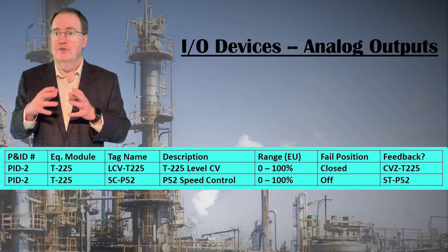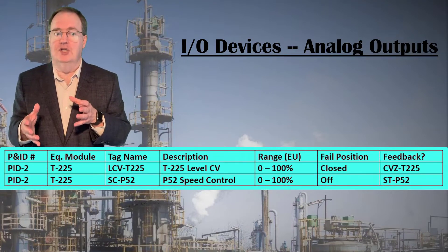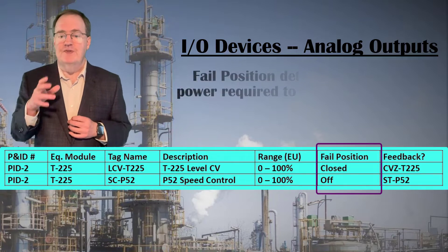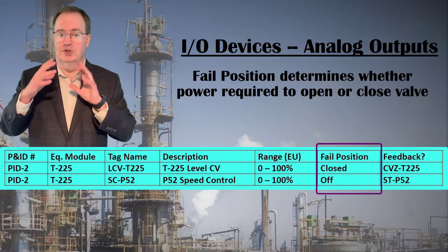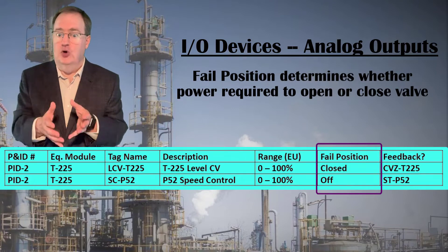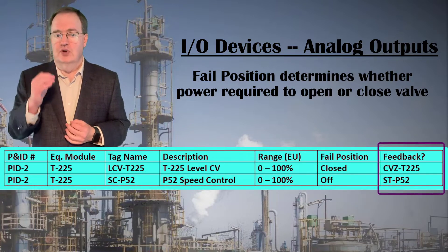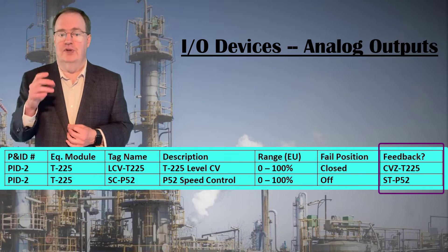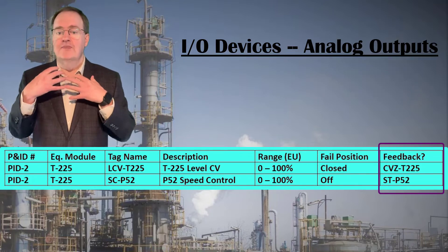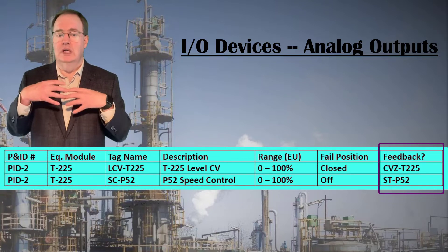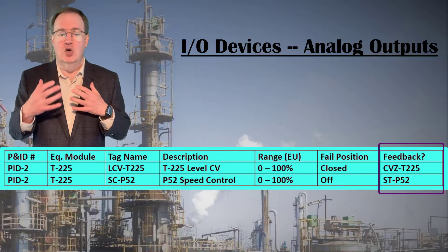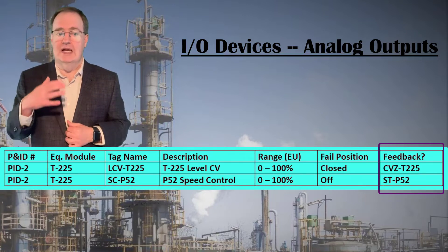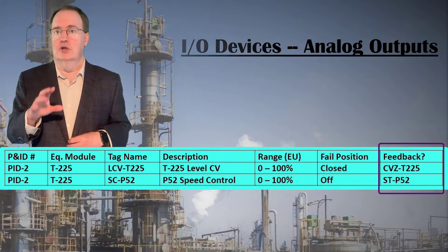For analog outputs — mostly control valves and motor speeds — we need the same identifying information. In addition, the fail or passive position, open or closed, is essential to specify for valves. A fail closed valve has to be sent a 20 milliamp signal to open fully, while a fail open valve will be sent a 4 milliamp signal to achieve the same position. For every valve, indicate whether there is feedback on the position of that valve with the tag name for the analog input for that feedback. For variable speed motors, the analog output is generally labeled SC for speed control and the feedback ST for speed transmitter. Note that those feedback signals for the analog output devices are in fact analog inputs — listing them both as analog inputs and also in the output table is thorough and best practice.